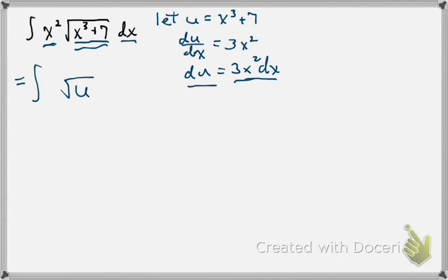It's okay that we don't have a 3. We can always adjust for a constant. So for instance, I can put a 3 in here. Now I've changed my integral. So to make it so it's not changed, I'm going to multiply by 1 third out front. And that 1 third has to follow my integral.